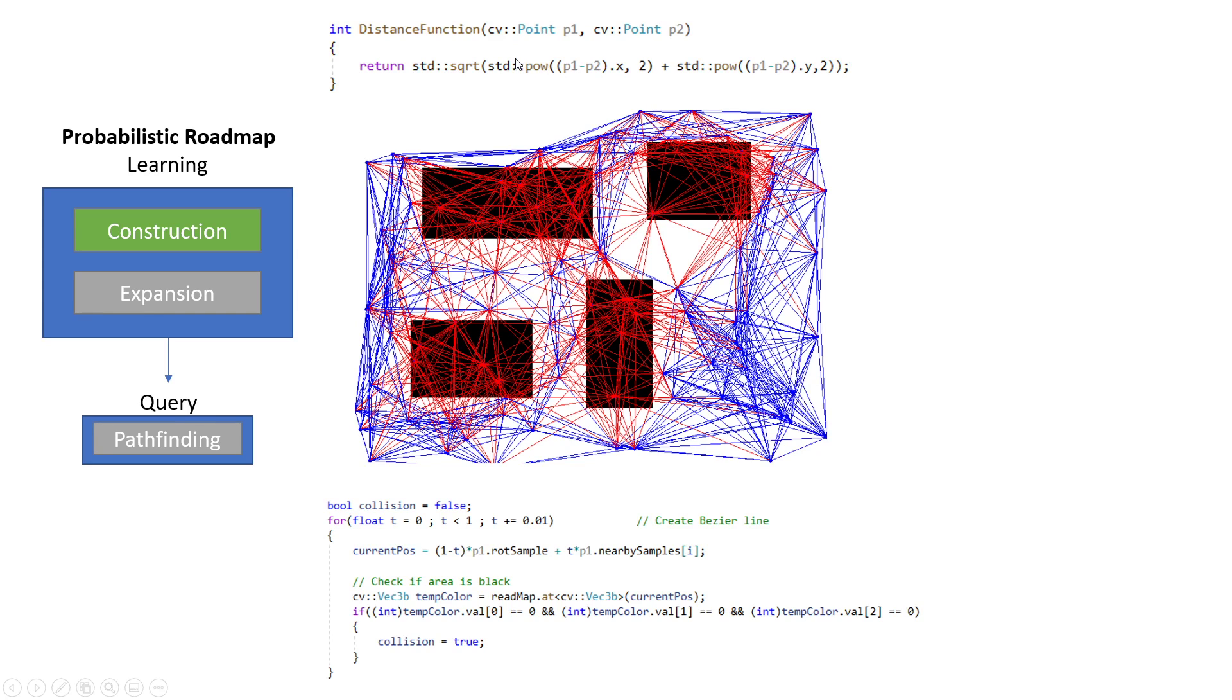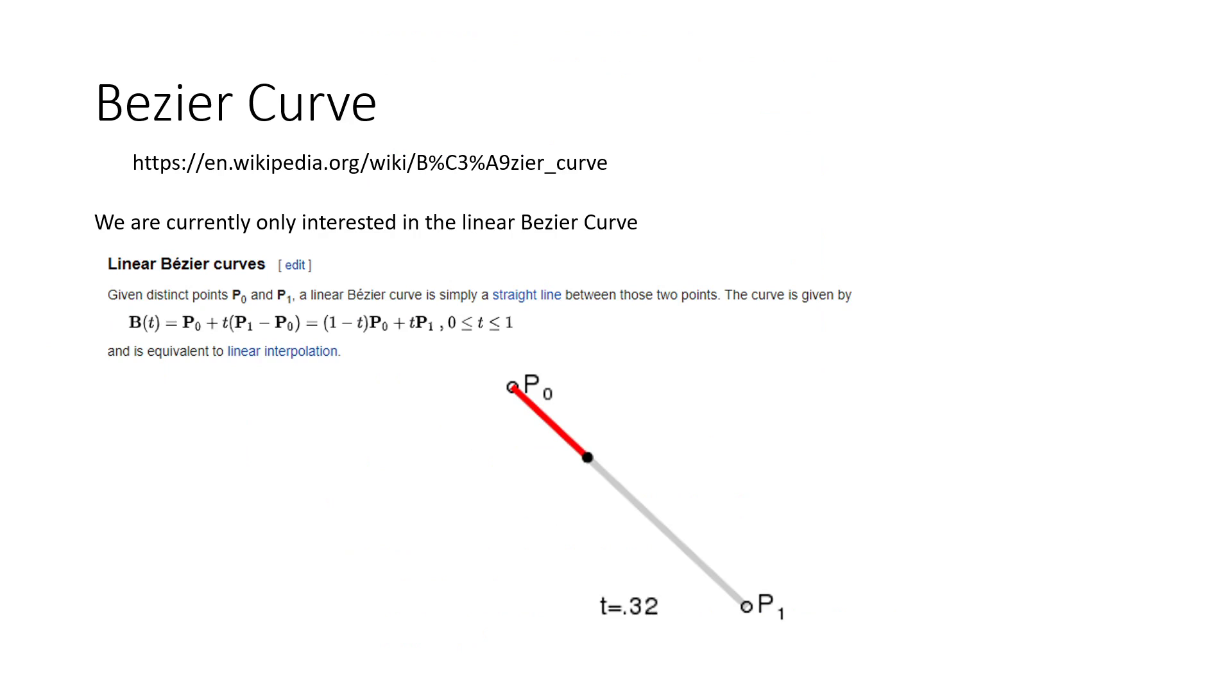And very simply, in order to calculate the distance, I'm basically doing some vector math, calculating the distance between two points, the magnitude. And in order to detect whether or not there's an obstacle between these two, I'm using a Bezier line or linear Bezier curve. This is a piece of math that I'm getting very interested in recently.